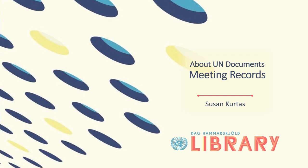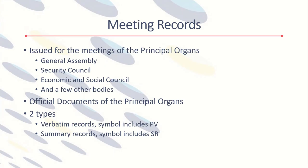This presentation will give a brief overview of meeting records and explain the structure and kind of information found in meeting records. Meeting records are issued for the principal organs and for selected subsidiary bodies. There are two types of meeting records: verbatim records with the symbol element PV, for the French term procès-verbal, and summary records with the symbol element SR.